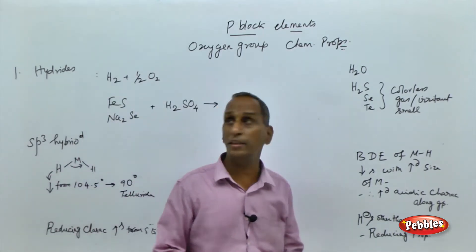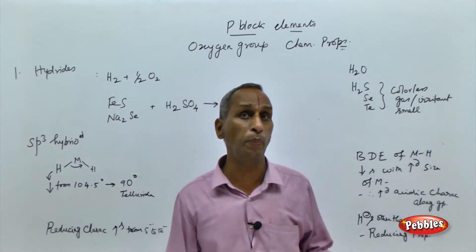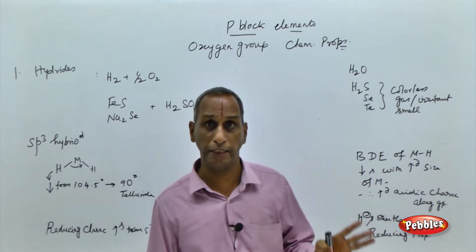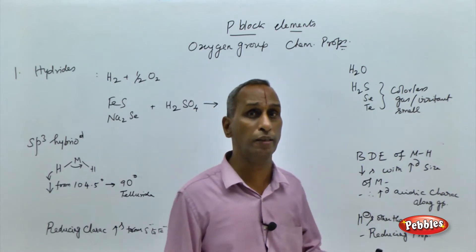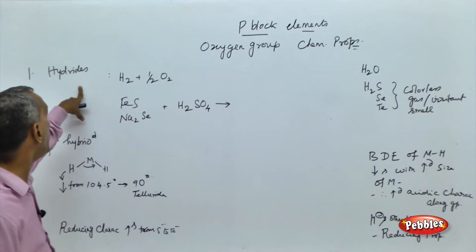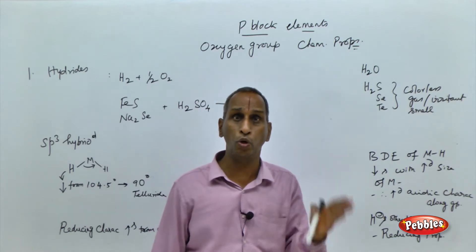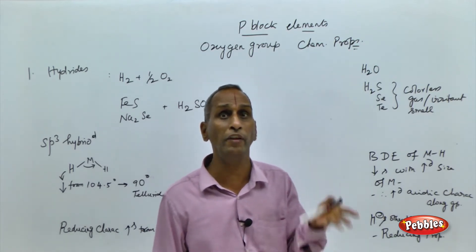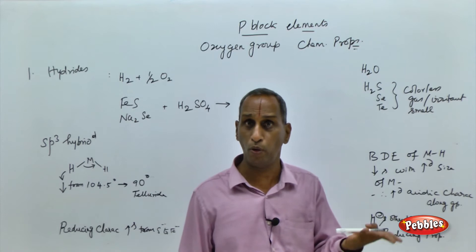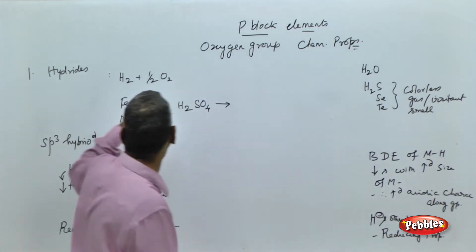Chemical properties means how elements combine with other types of elements. Oxygen group elements form three types of compounds: hydrides, halides, and oxides. Now we will see the aspects of hydrides. A hydride is the compound with hydrogen. Sodium hydride, for example, is the compound of sodium with hydrogen. Water itself is called oxygen hydride or hydrogen oxide — it is a hydride of oxygen.